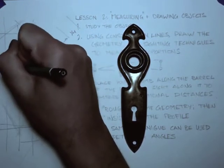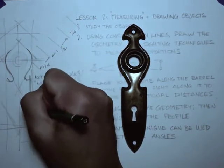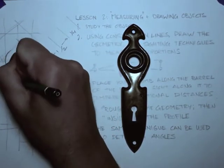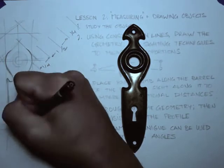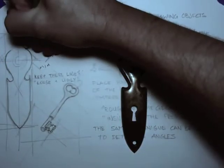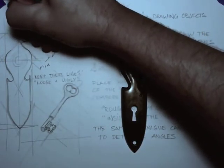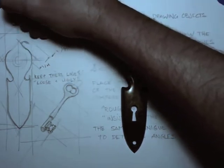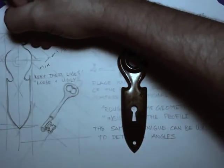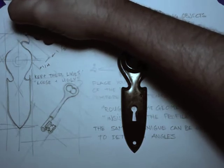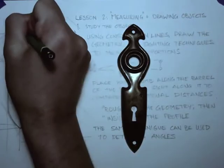This will work even when the object is not right there on your page next to you. You can sight along your pencil either right in front of your eye or at arm's length depending on the distance of the object you are studying.